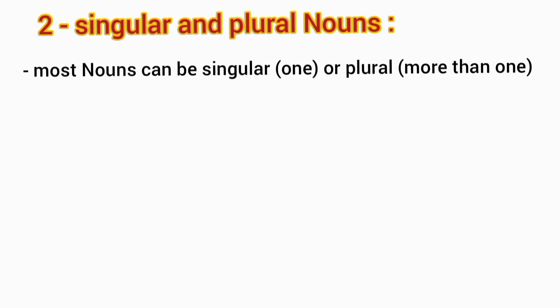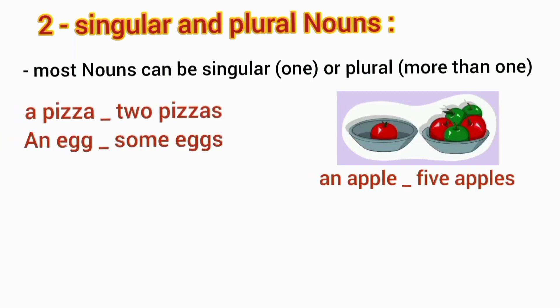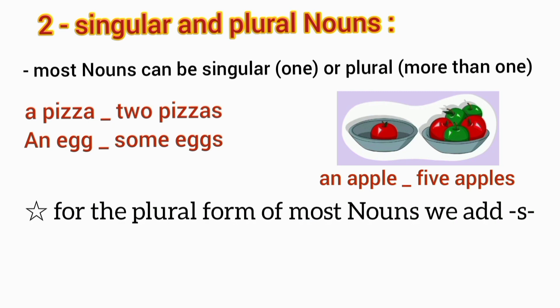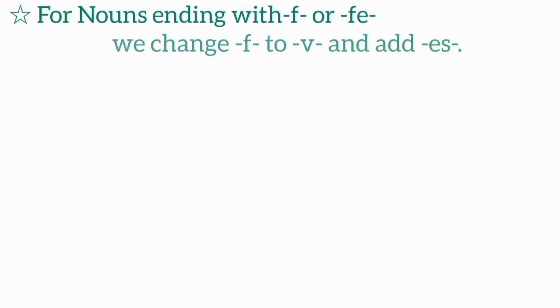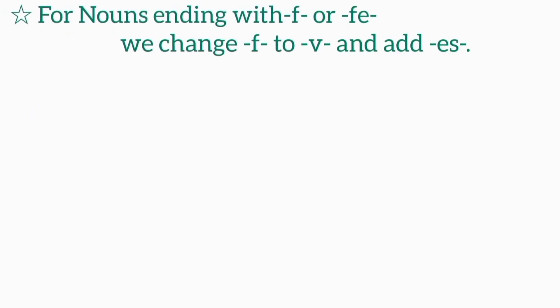A pizza, two pizzas. An egg, some eggs. An apple, five apples. For the plural form of most nouns we add S: bottle, bottles; pen, pens; bus, buses.